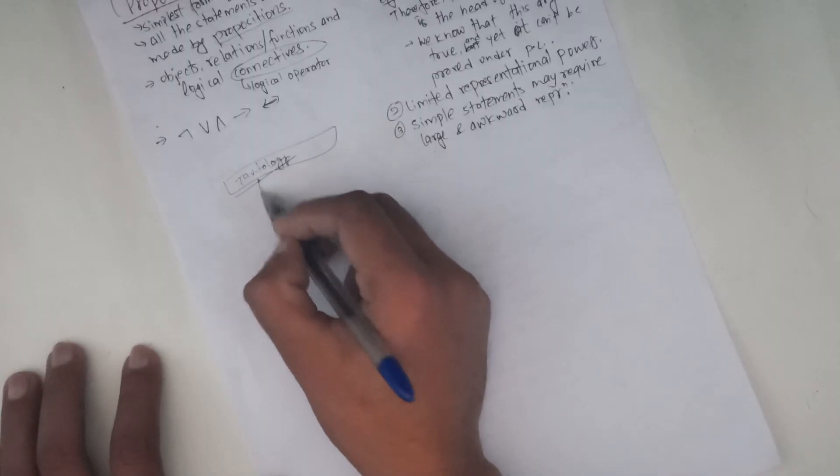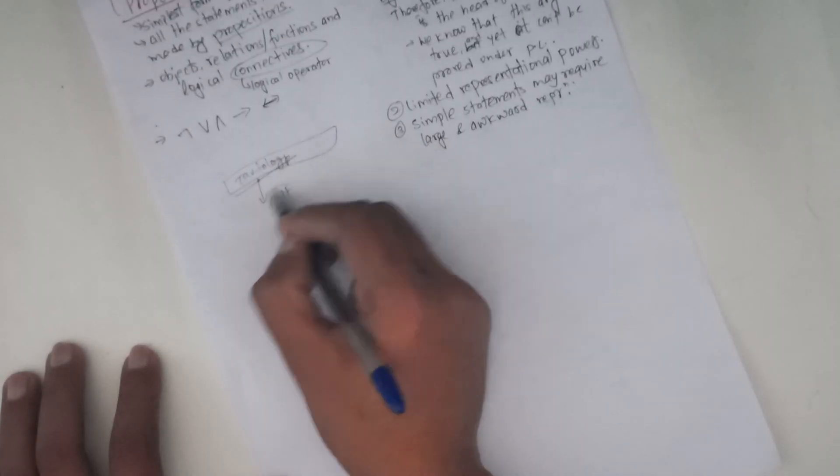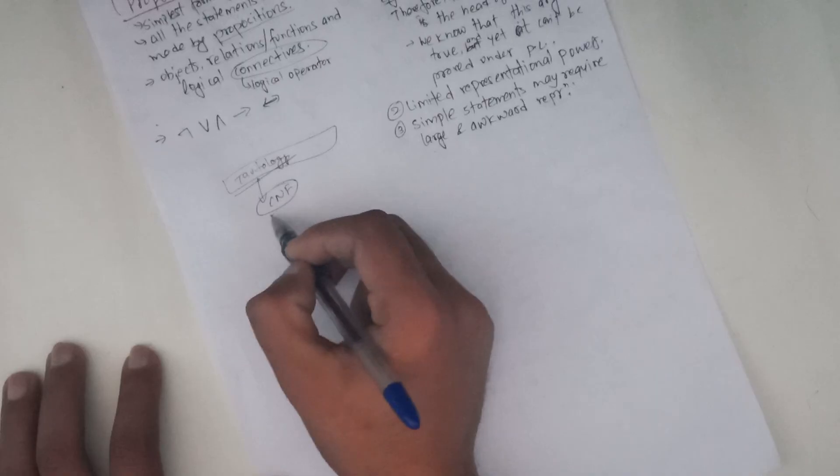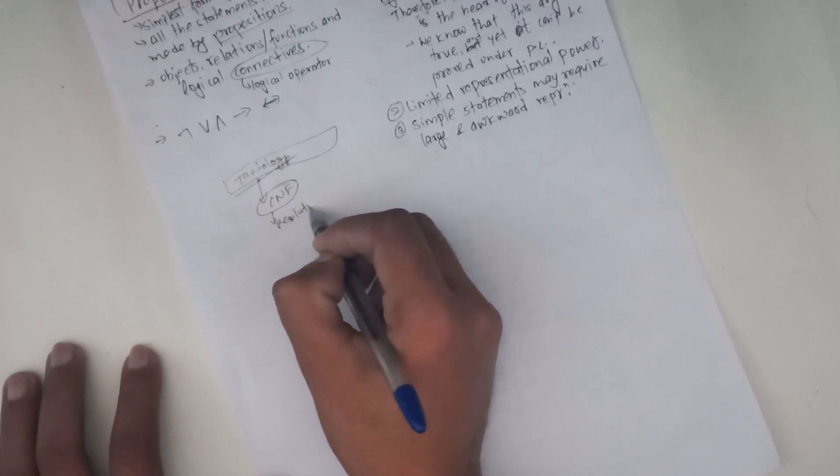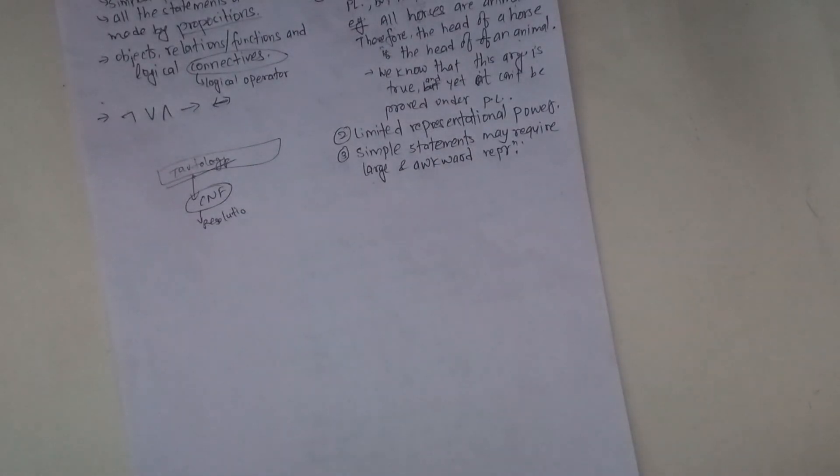Resolution is in CNF. How can we convert English sentences to predicate logic? How can we convert resolution in predicate logic?